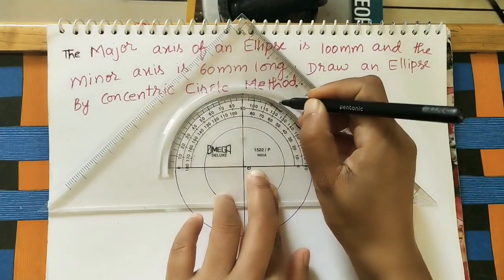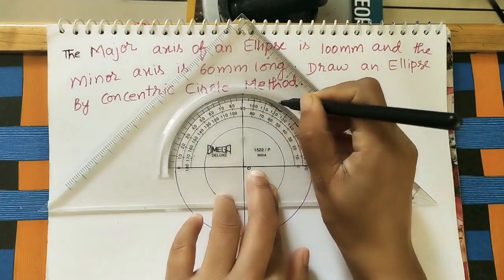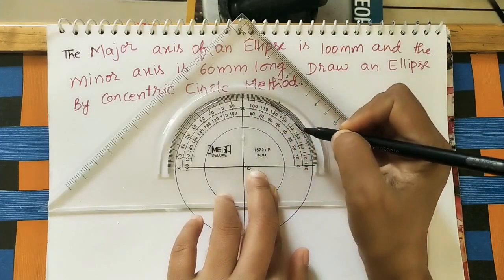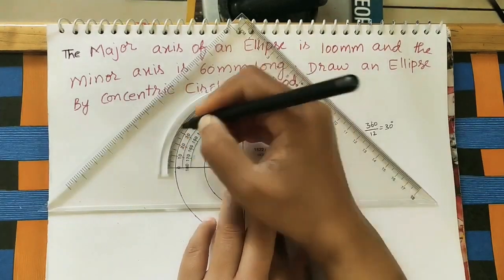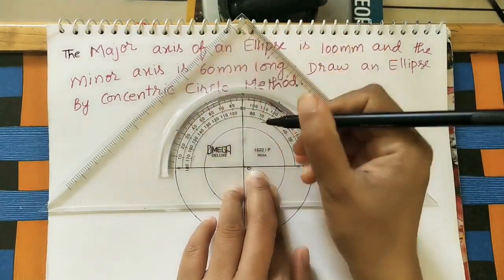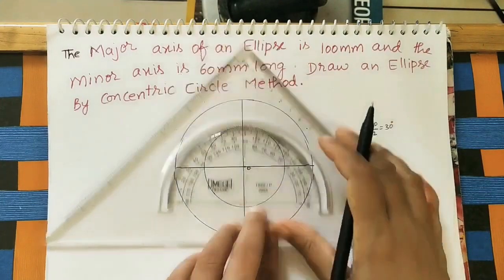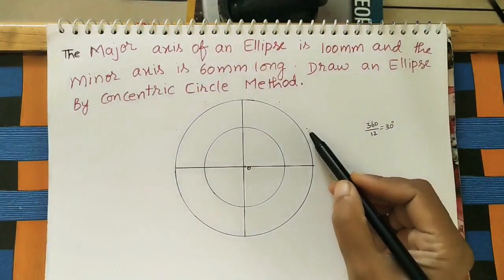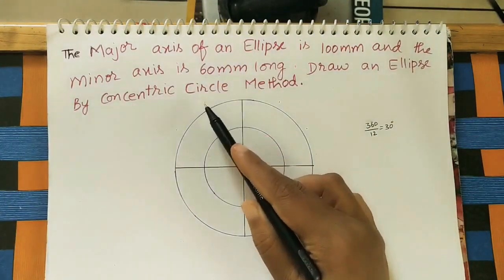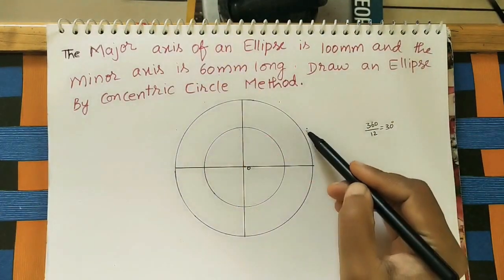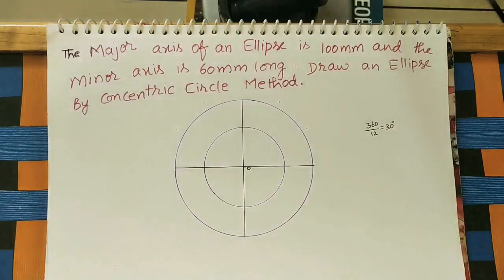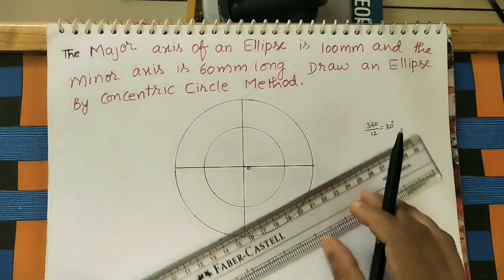Mark 30 degrees, then 60 degrees, then 90 degrees — 30 degrees each part. From the other side, give 30 degrees, then 60 degrees, then 90 degrees. After getting these points, join each point to the center and extend that line to make the divisions.